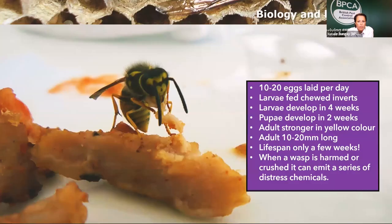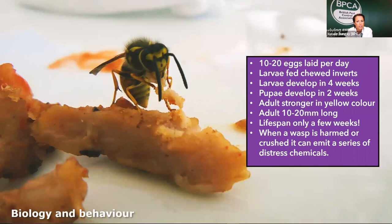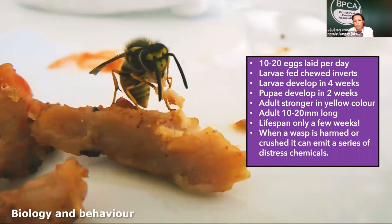The queen lays 10 to 20 eggs per day initially to get workers up and ready. The larvae feed on chewed insects and develop in about four weeks. It's a complete life cycle: egg, larvae, pupae, then adult. Wasps are distinguished by their stronger yellow colouring with black stripes. Adults only live a few weeks, so constant egg-laying and production of workers is really important for the queen to keep nest numbers stable and strong.